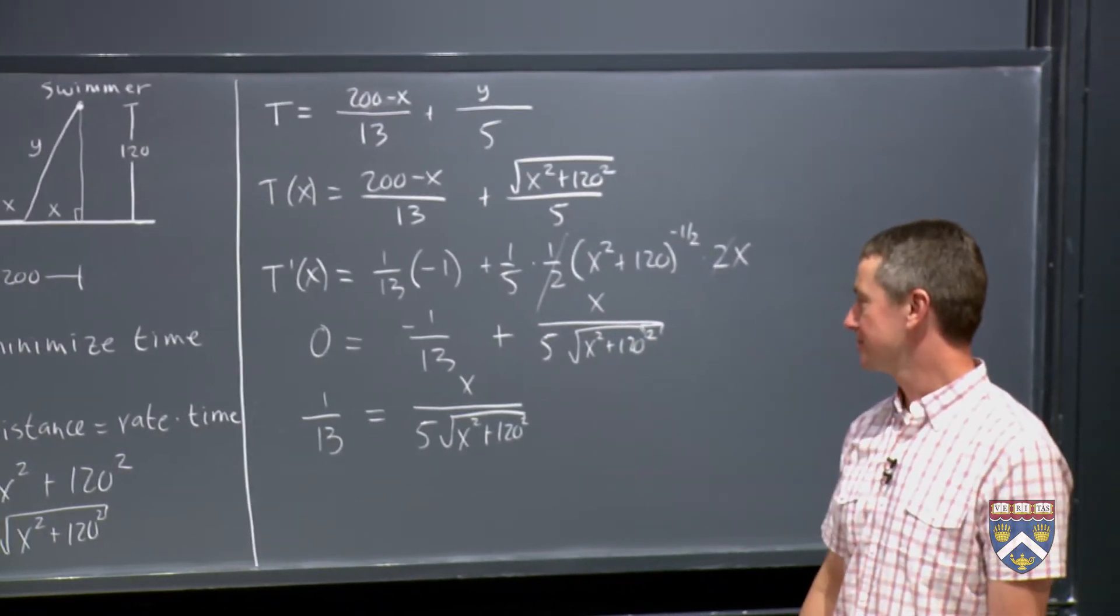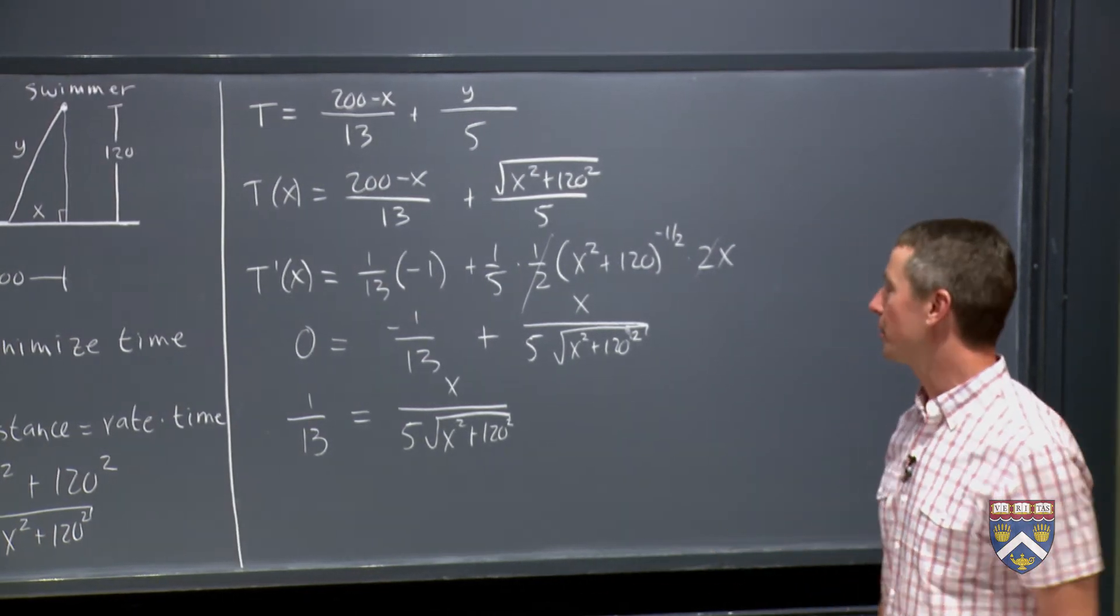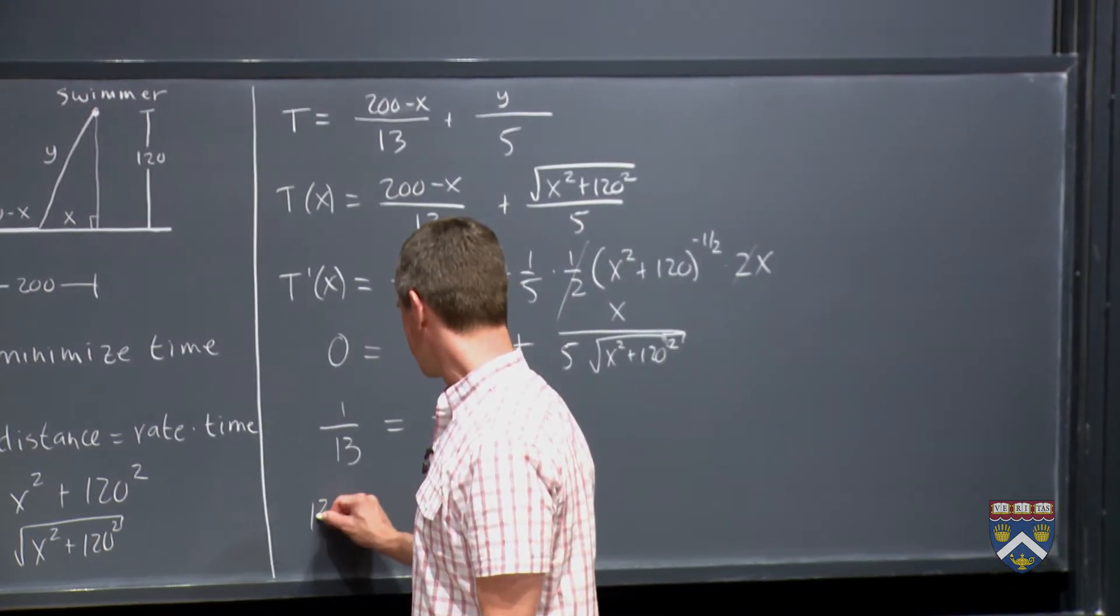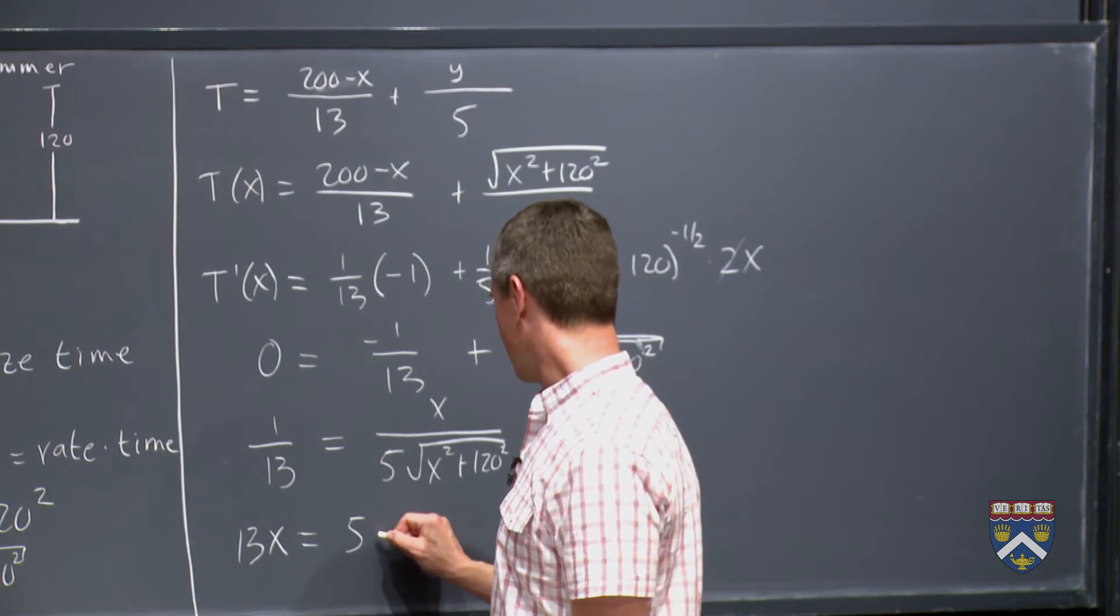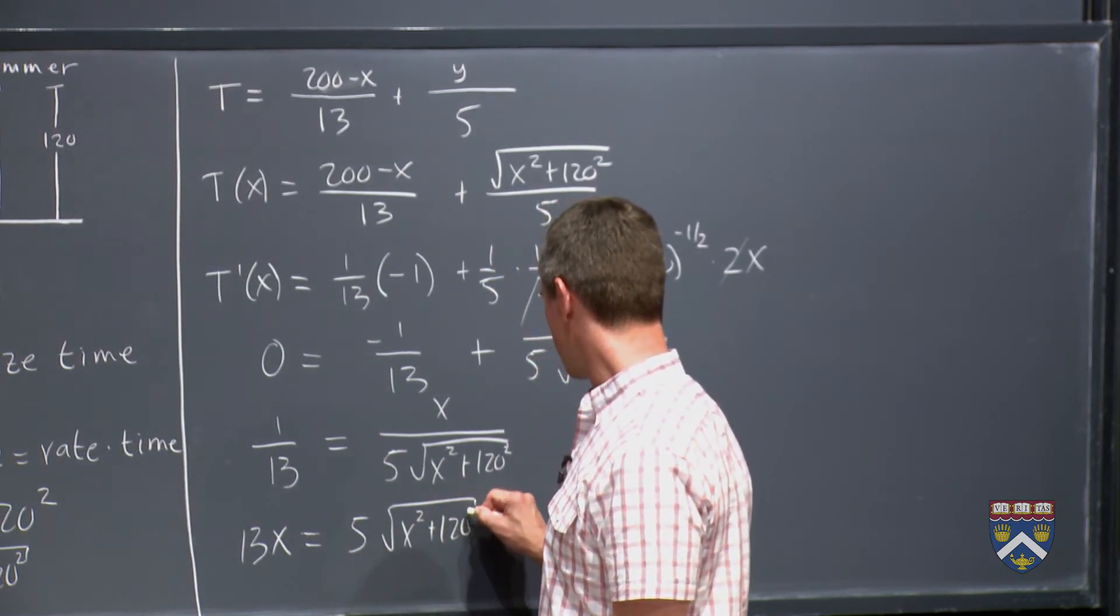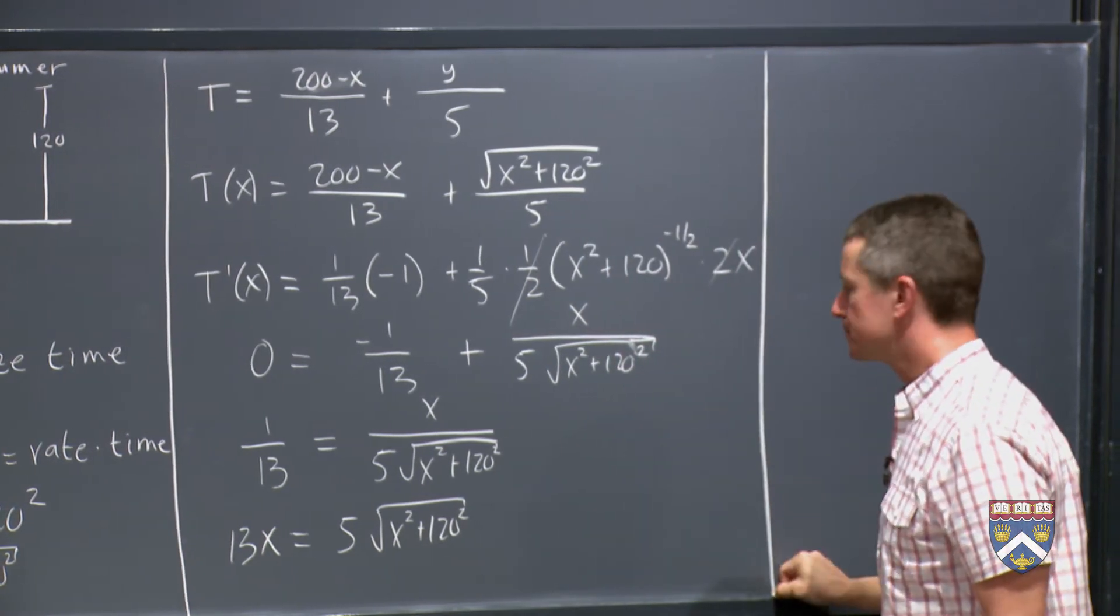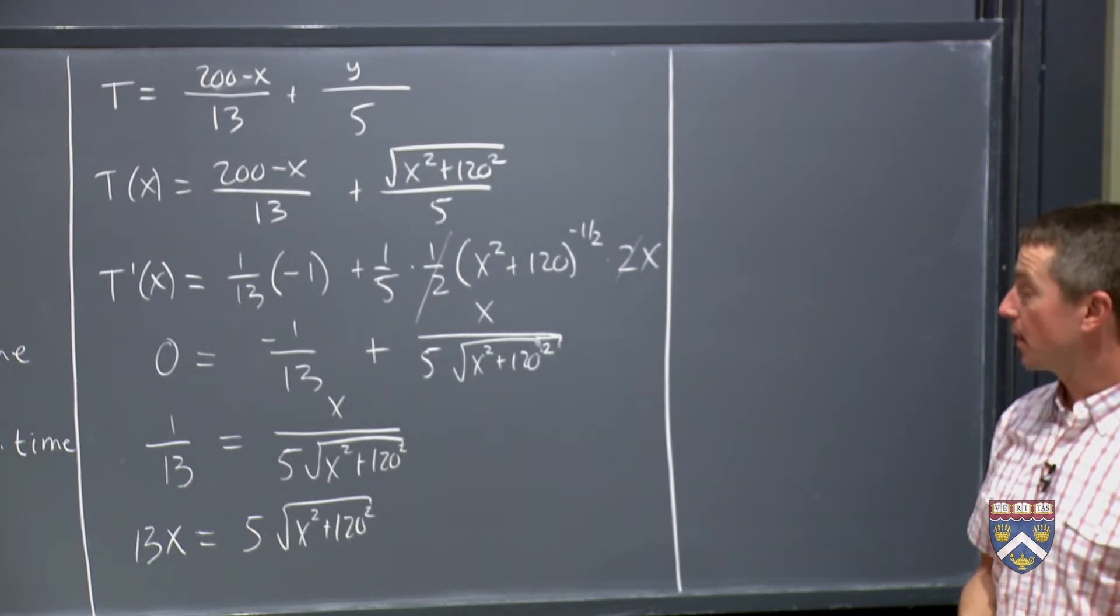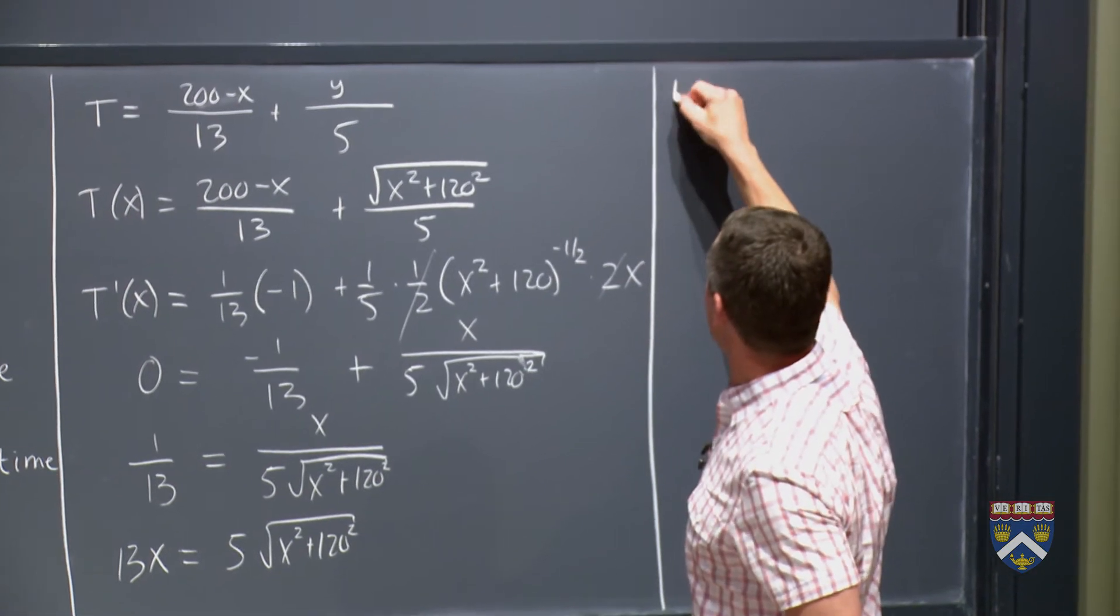There's not really any factoring we can do here. So let's move the 1/13 to the other side. So often solving an equation means getting rid of what you don't like. There are two things I don't like. I don't like fractions and I don't like square roots. To get rid of the fractions, we can cross multiply. 13x equals five times the square root of x squared plus 120 squared. And now we don't like square roots. So we square both sides. The square of 13x is 169x squared.